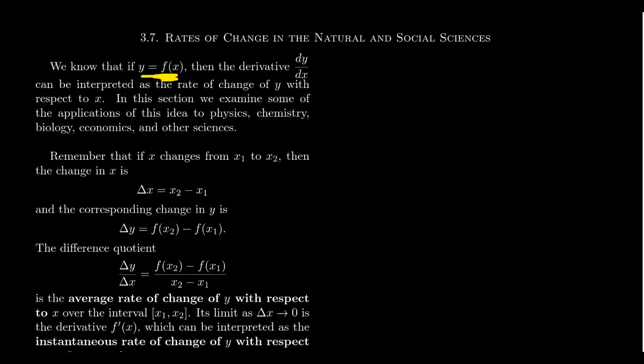So if our function y equals f of x is given, then remember the derivative dy over dx, which we sometimes abbreviate as f prime of x, the derivative dy over dx should be interpreted as the rate of change of the quantity y with respect to the quantity x. So as x is changing, how does that relate to the change of y? So the derivative measures this rate of change.